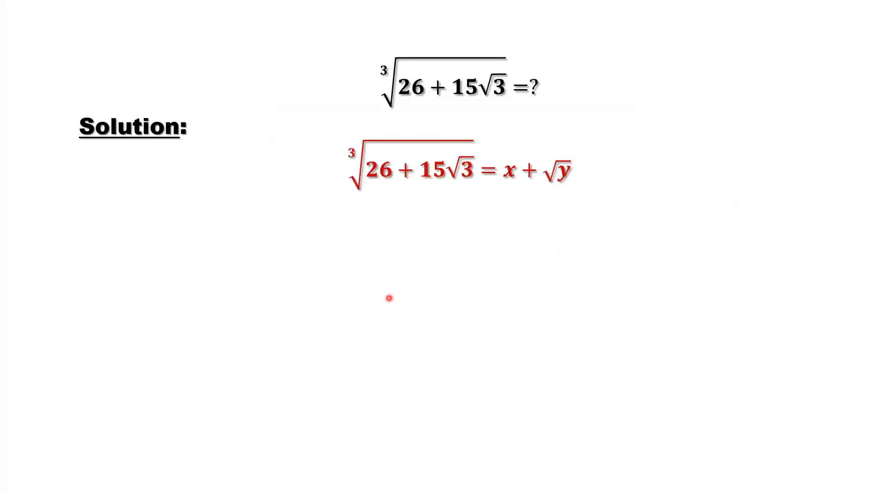This is the very important assumption. We assume that the third root of 26 plus 15 times square root of 3 has this kind of format: x plus square root of y.